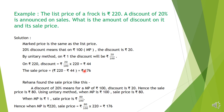Another girl named Rihana solved it using the unitary method. A 20% discount means for a marked price of Rs 100 the discount is Rs 20, so the sale price is Rs 80. Using unitary method: when MP is Rs 100, sale price is Rs 80; when MP is Rs 1, sale price is Rs 80 by 100; when MP is Rs 220, sale price is Rs 80 by 100 into Rs 220, which equals Rs 176.